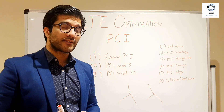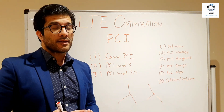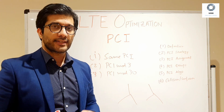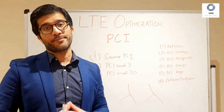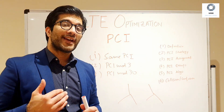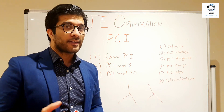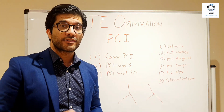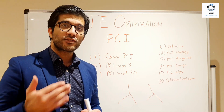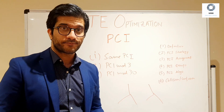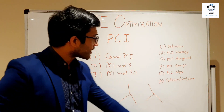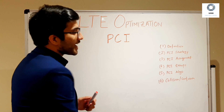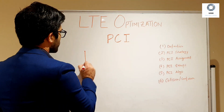To recap, the KPIs that might be affected by same PCIs are retainability — your drop call ratio — which is affected due to handover issues caused by PCI problems. The other KPI is accessibility: if there is PCI confusion while a cell is accessing the network, a RAT request may have resources acquired but the RRC connection setup or RRC connection reconfiguration could be sent to a cell that is not your intended cell, affecting your accessibility KPIs.